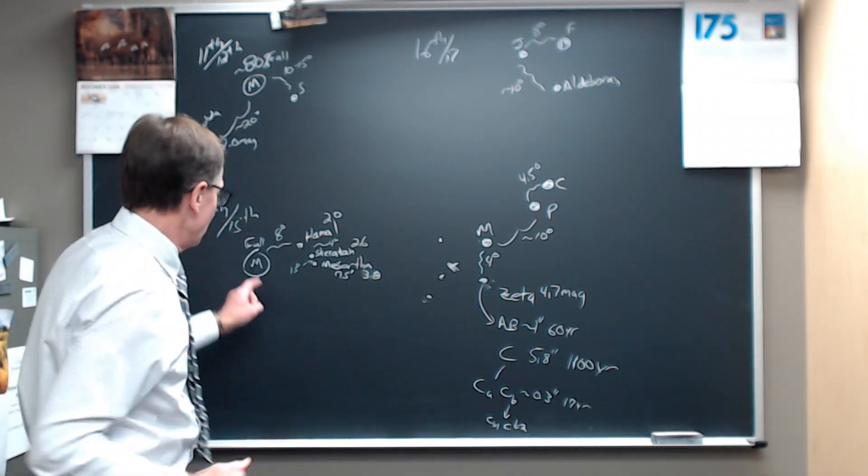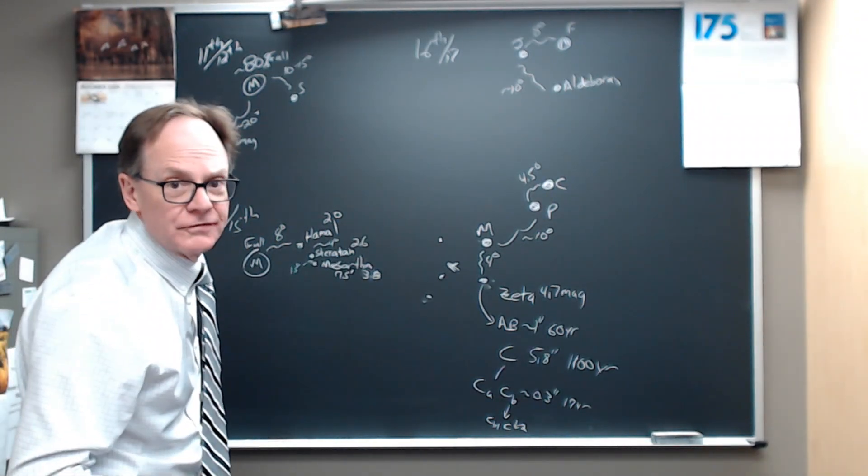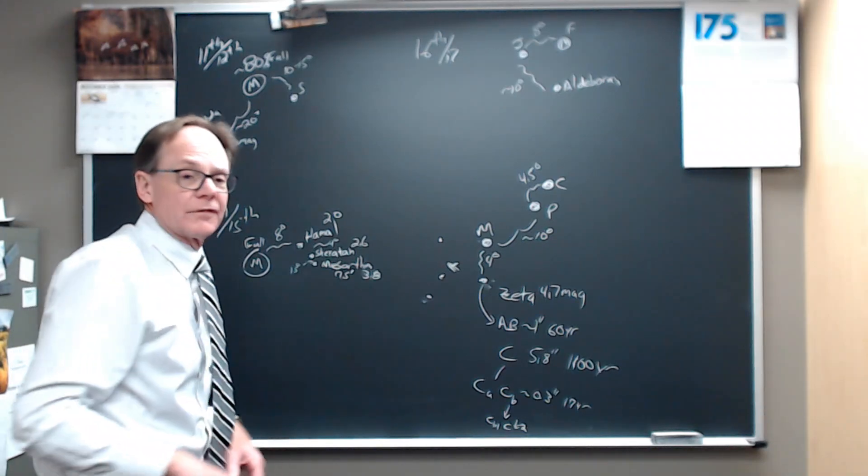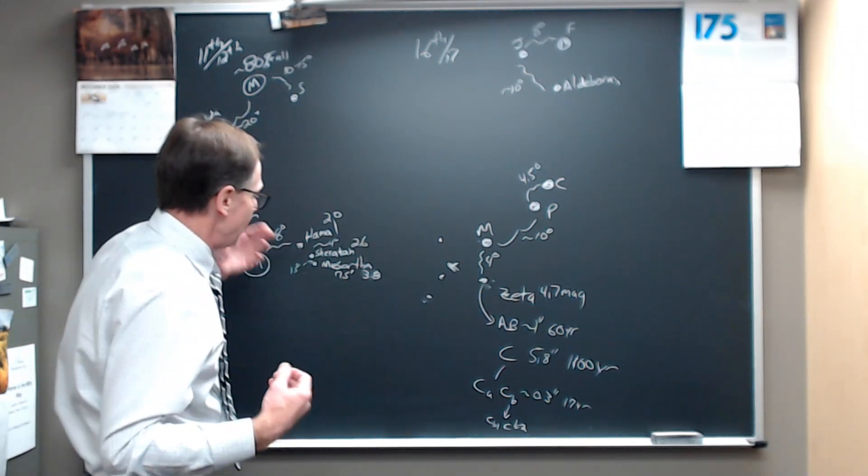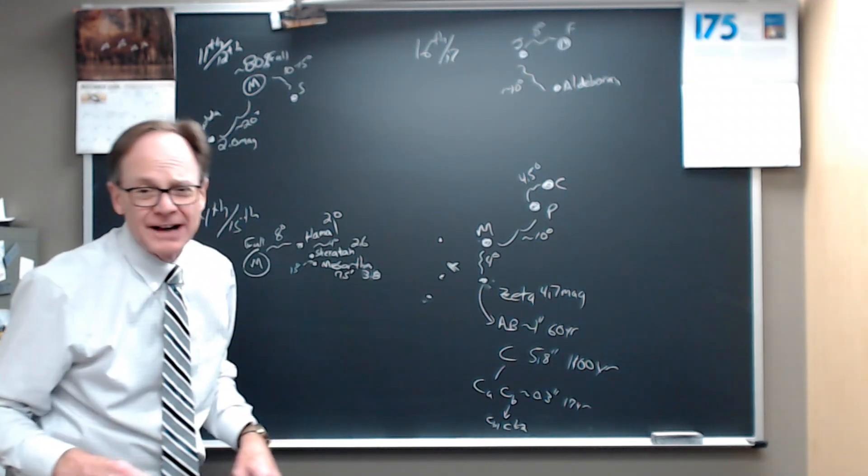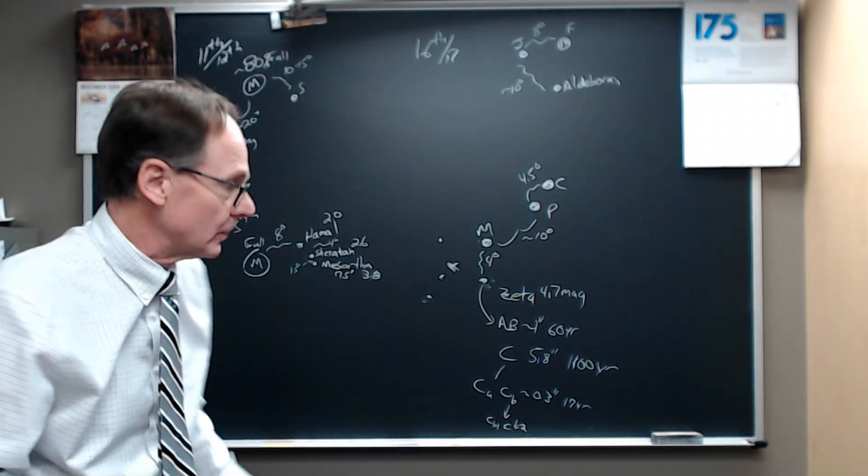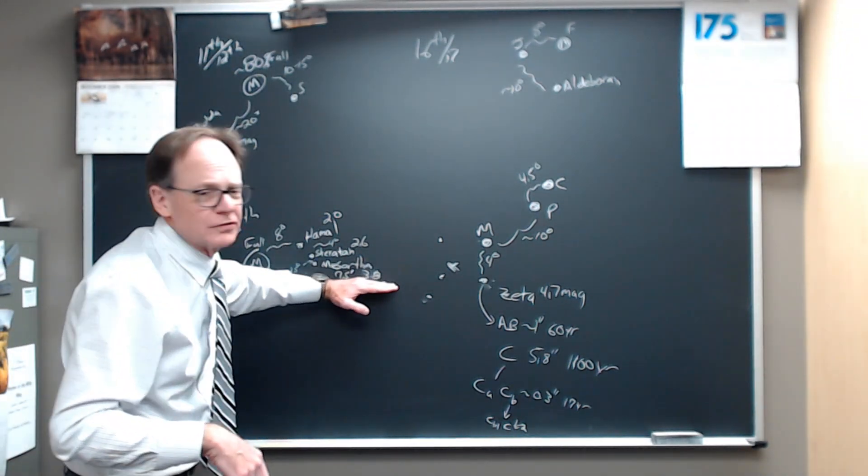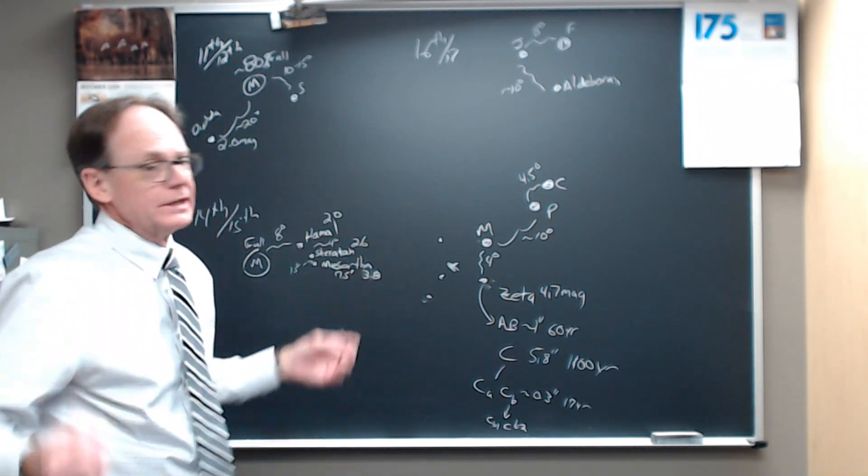One night later, the moon will have moved far enough off this direction. Two nights later, for sure, that you can probably pick out Mesartim if you've got a dark sky without the moon, with naked eyes. But use optical aid as you need to.